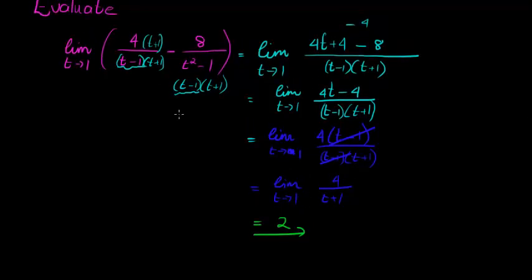Let's quickly go through the meaning of this again. This means that the limit of t tending to 1 of this expression, 4 over t minus 1 minus 8 over t squared minus 1, this expression will tend to 2 when t tends to 1.